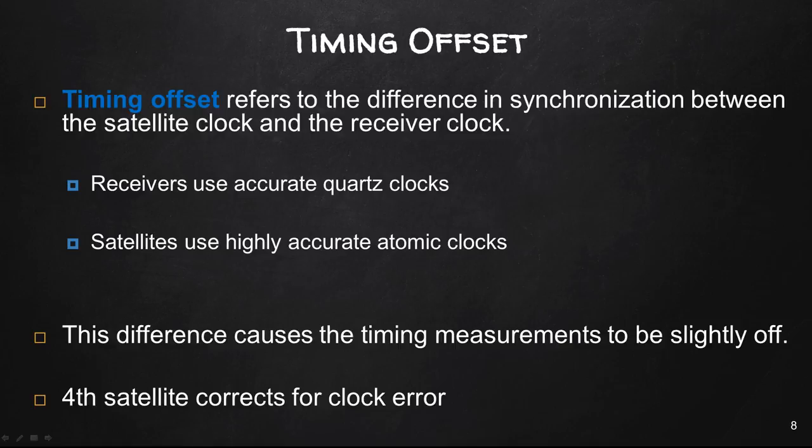Timing offset refers to the difference in synchronization between the satellite clock and the receiver clock. The receiver clock uses an accurate quartz clock, but it's not nearly as accurate as these highly accurate satellite clocks. If we had one of these atomic clocks in our receiver, nobody would ever be able to afford it because it would be far too expensive. So they have to use something cheaper, a quartz clock. This difference causes the timing measurement to be slightly off, so a fourth satellite corrects for clock error.